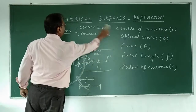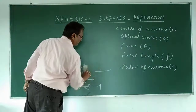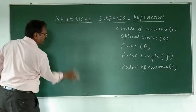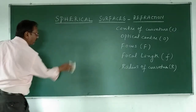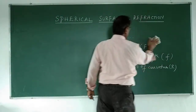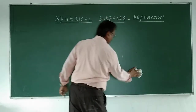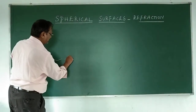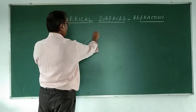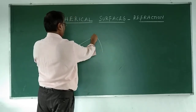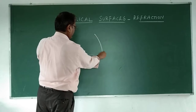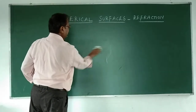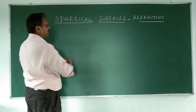This lens is called a convex lens because it is bulged outward. Let me now draw a ray diagram with fewer rays using a simplified thin lens representation.